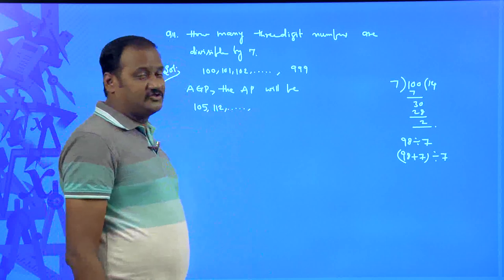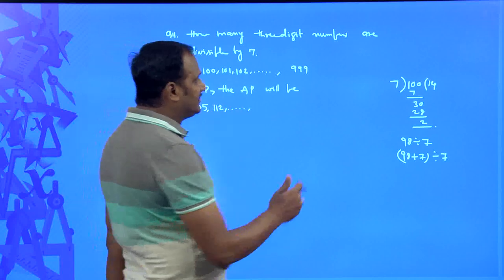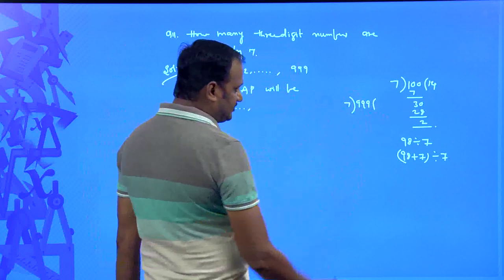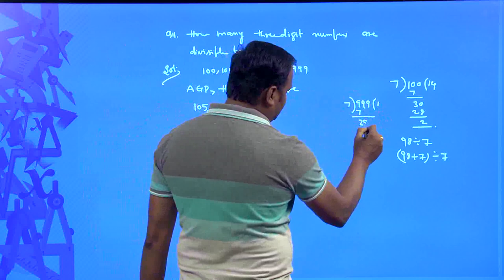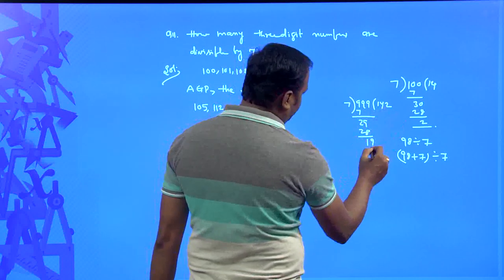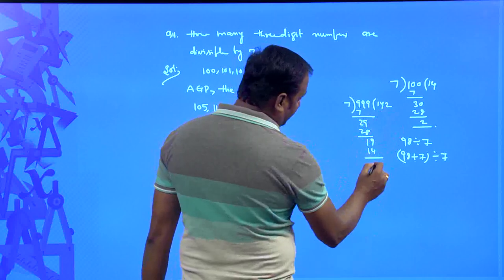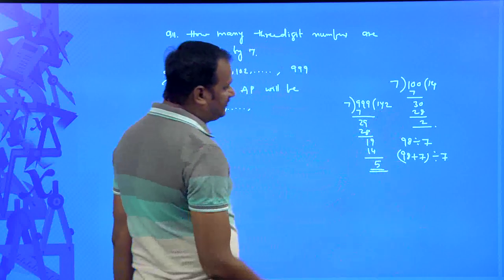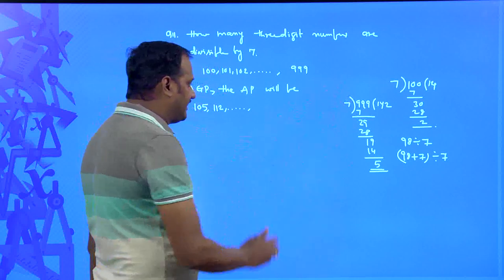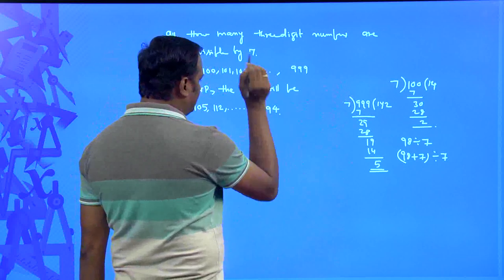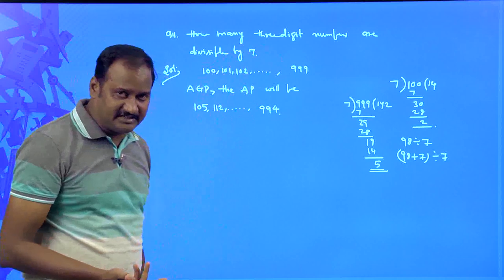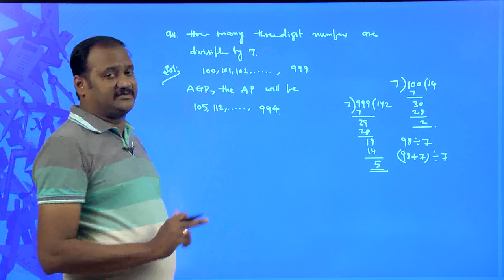Now I need to find the last term as well. The last three-digit number is 999. Dividing 999 by 7: 7 ones are 7, 7 fours are 28, 7 twos are 14 — the remainder is 5. A remainder of 5 means we subtract 5 from 999, giving 994. So 994 is the last three-digit number divisible by 7. We don't know how many terms are in the sequence, but we know it is an arithmetic progression.